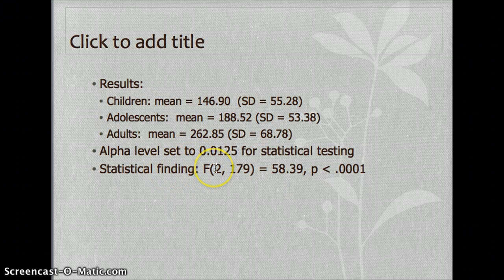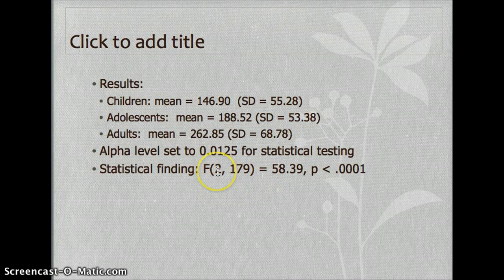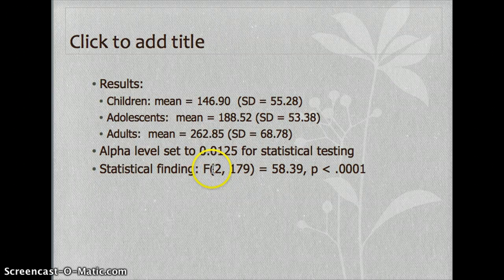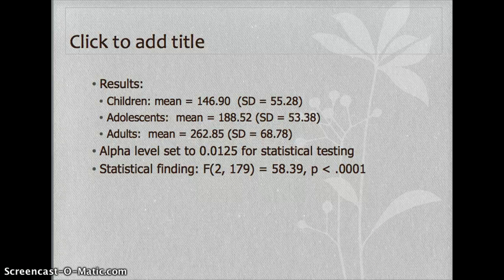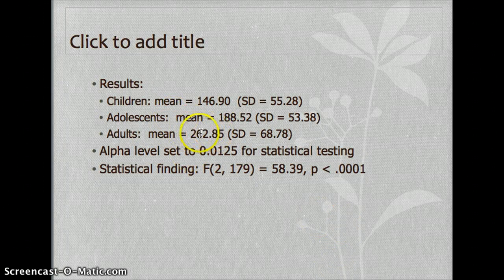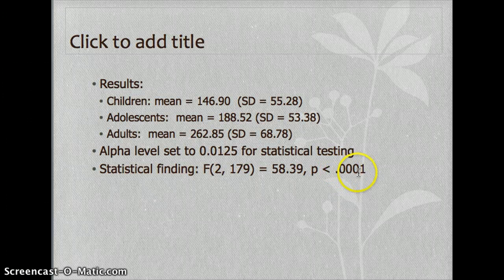Here's what they found. Here are the degrees of freedom. From the degrees of freedom, how many groups are there? You should get three groups, because it's three minus one, or two. Now, how many participants are there? Follow-up testing indicated that the adults produced more words than both the children and adolescent participants. We see this because their means are so much higher, and P is less than 0.0001, which is significant.